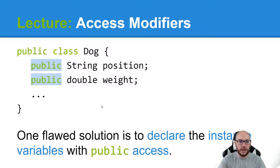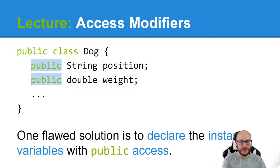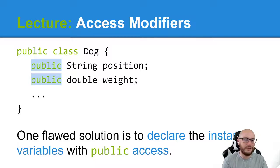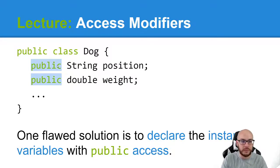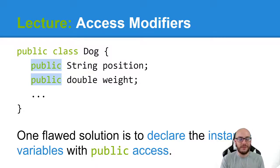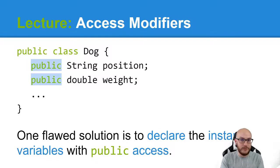One flawed solution is to use a public access modifier. You'll lose points if you do this on an AP exam. If you're doing free response code and you try to create a class such as dog and you have instance variables and you proceed to label them with public, they will take a point off. They're telling you explicitly to use private. You don't have to understand why it has to be private — they're just telling you to use private.